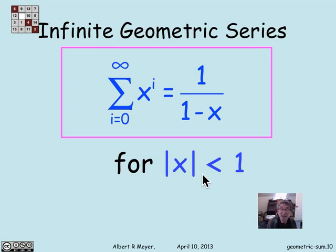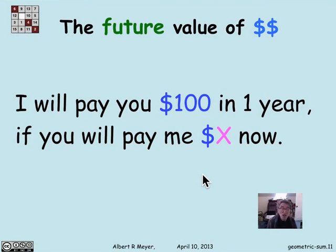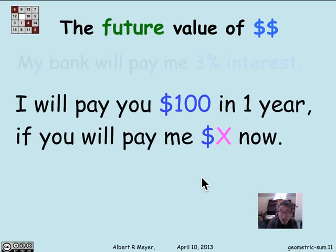That's the mathematical preliminaries of geometric sums and geometric series. Now let's look at a typical application having to do with the future value of money. Suppose we want to make the following deal: I promise I will pay you $100 in one year if you will pay me a fixed amount x dollars now. The puzzle is: how much money is $100 worth if you can't have it now, you can only have it in one year? What would be a fair amount — nobody loses?